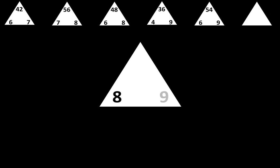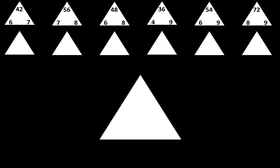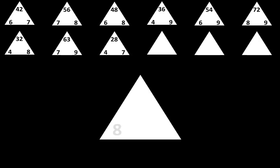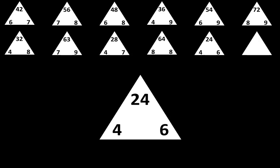The next one is 8 times 9 is equal to 72. Let's move to the next row. The next one is 4 times 8 is equal to 32. The next one is 7 times 9 is equal to 63. The next one is 4 times 7 is equal to 28. The next one is 8 times 8 is equal to 64. The next one is 4 times 6 is equal to 24. The next one is 5 times 9 is equal to 45.